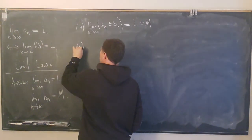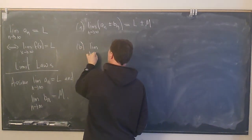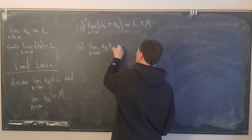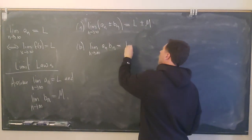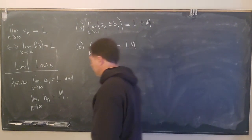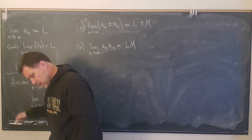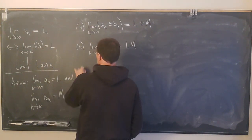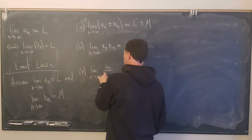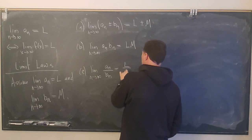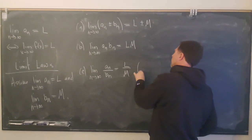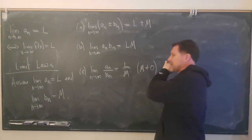Sequences also work nicely when it comes to multiplication: the limit as n goes to infinity of a sub n times b sub n equals l times m. Limits work nicely with division also: the limit as n goes to infinity of a sub n divided by b sub n equals l divided by m — this is true as long as m is not equal to zero, since we can't divide by zero.